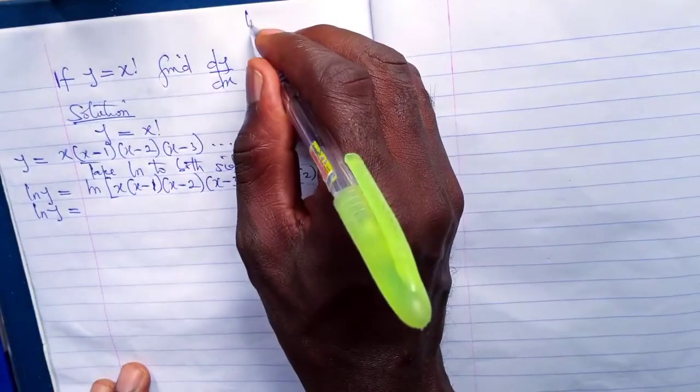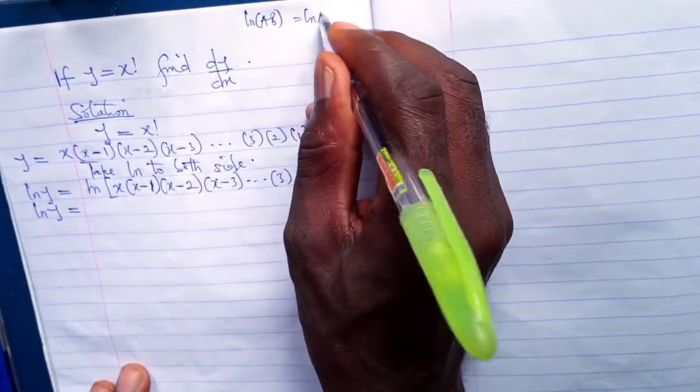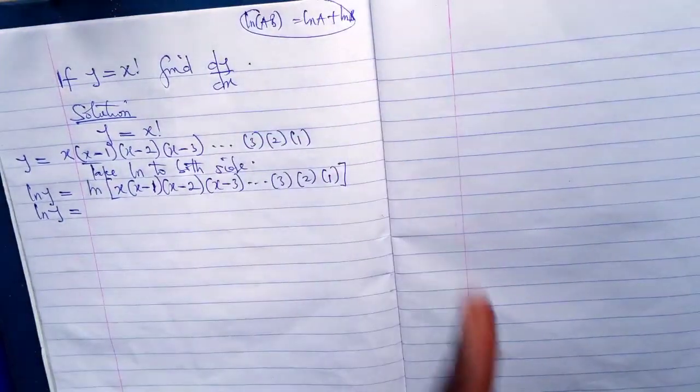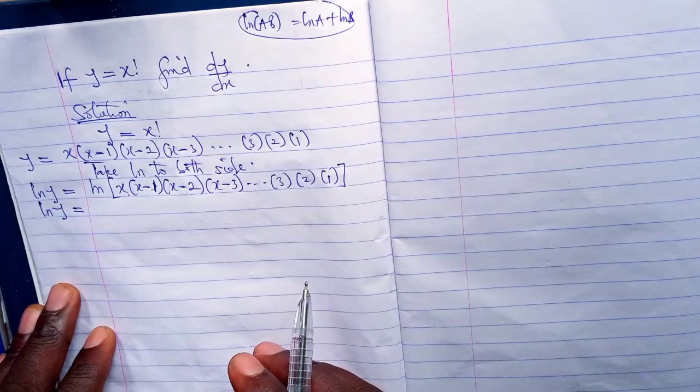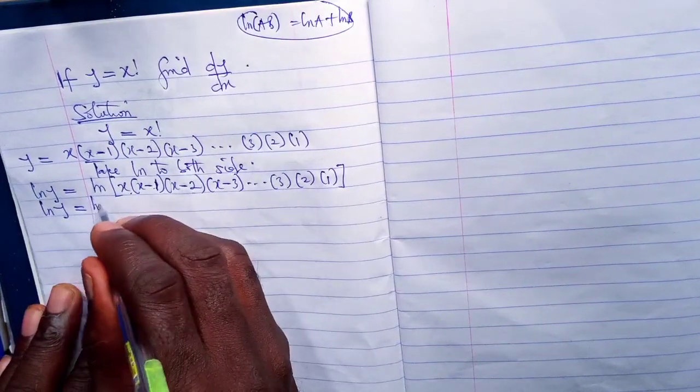Remember, ln of AB is what? ln A plus ln B. This is a law of logarithms, and all these things here are products. For that being the case, we need to separate it.